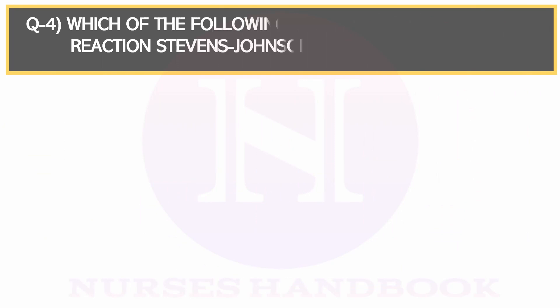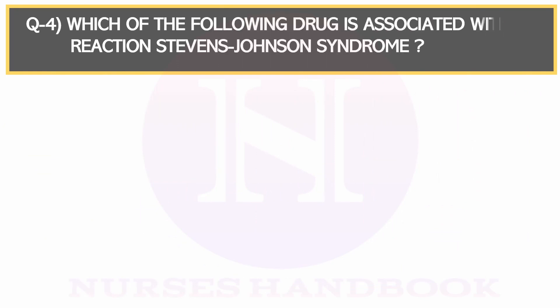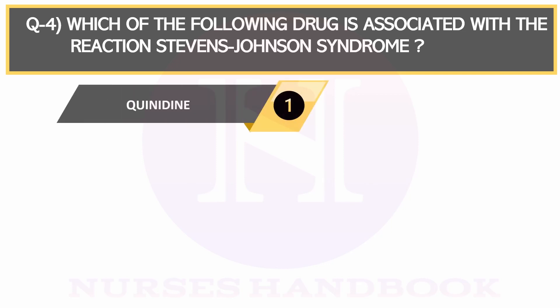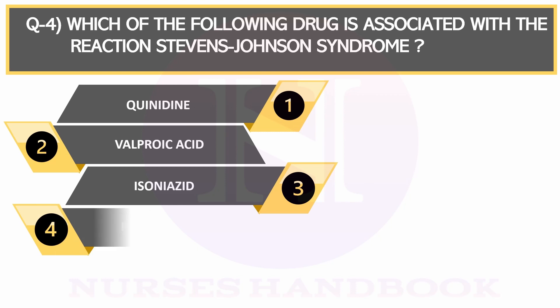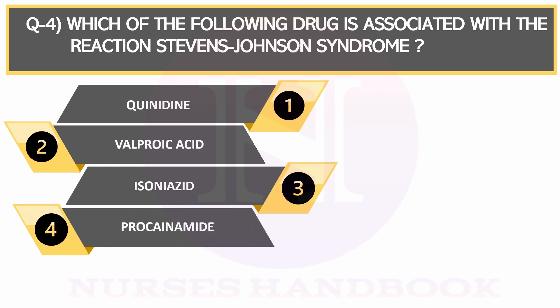Question number 4. Which of the following drugs is associated with the reaction Stevens-Johnson syndrome? Option 1: Quinidine, Option 2: Valproic acid, Option 3: Isoniazid, and Option 4: Procainamide.